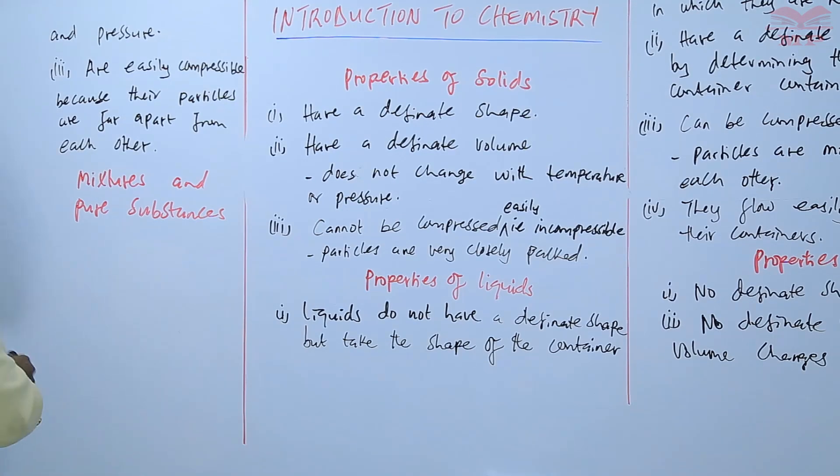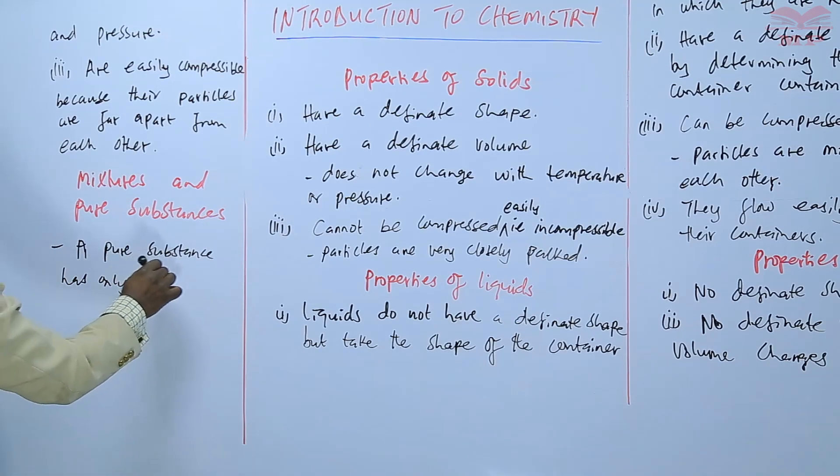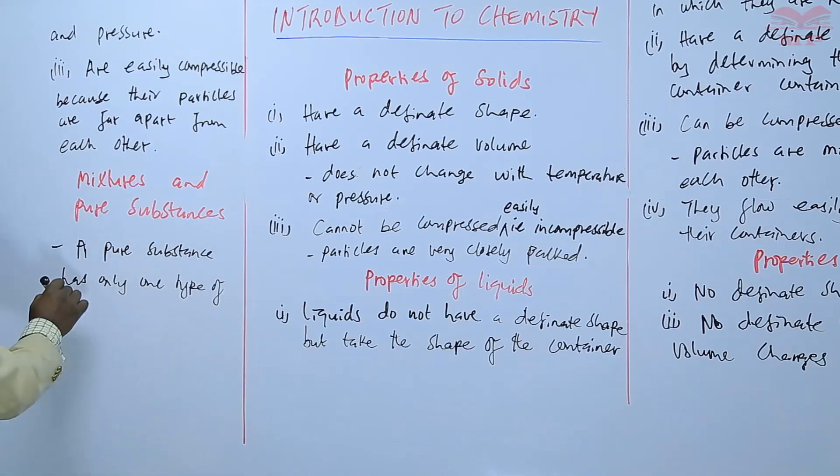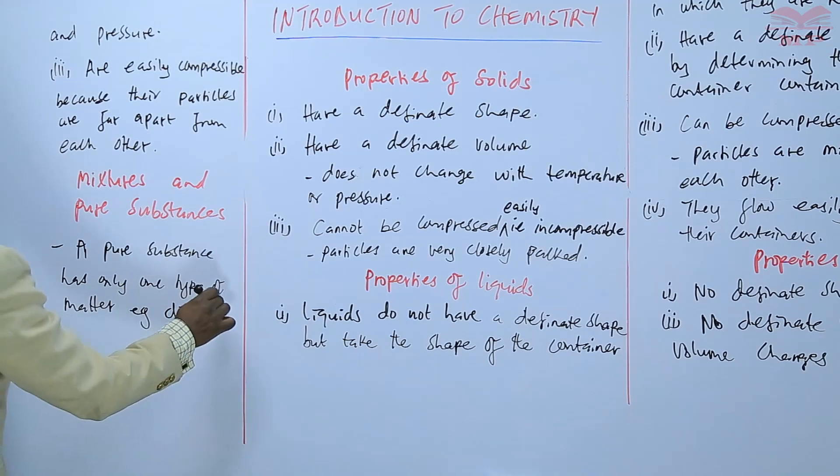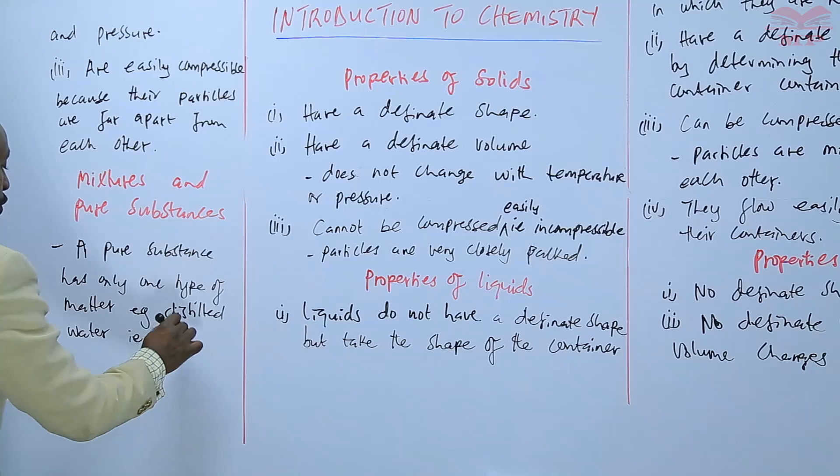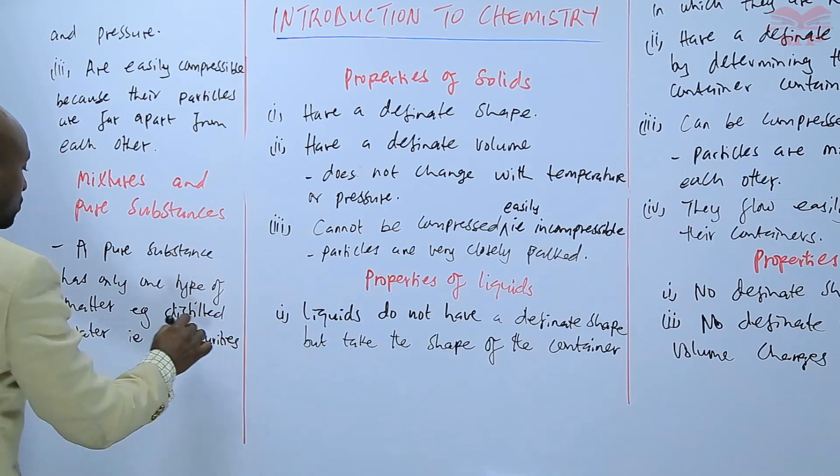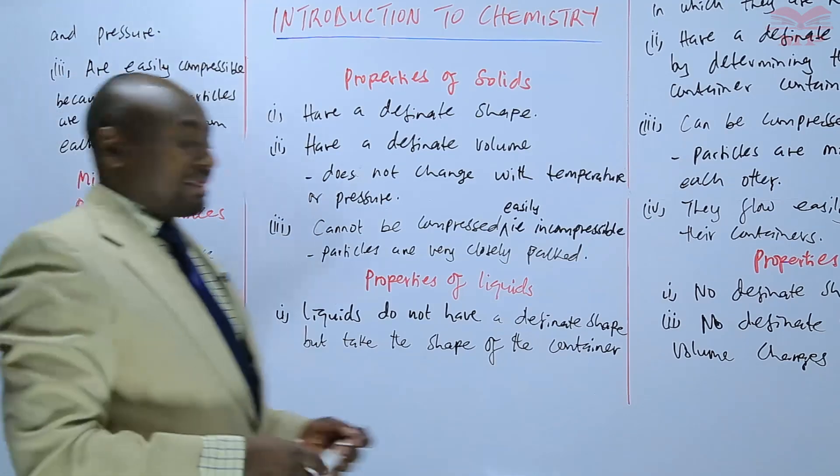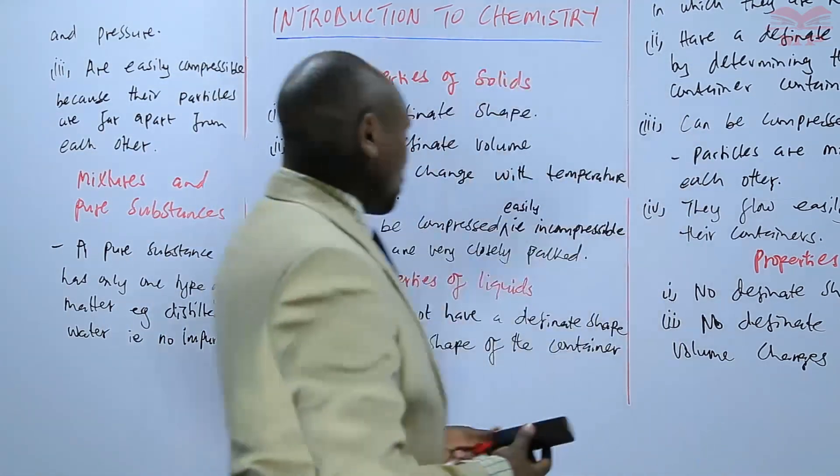For example, we can say that a pure substance has only one type of matter, only one particular type of matter. You can have an example like distilled water. So distilled water has only water but not any other type of matter, or on the other hand we can say that it has no impurities. There are no other things that make that distilled water to be impure.